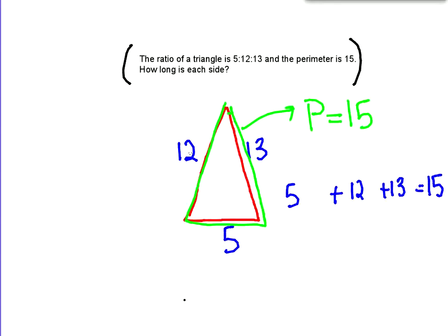However, we don't know the length of each side, but we do know the ratio. So in this case, just trust me and know that you have to put an x in for each one. So we know that 5 times some number, plus 13 times some number, plus 12 times some number, is going to equal 15.